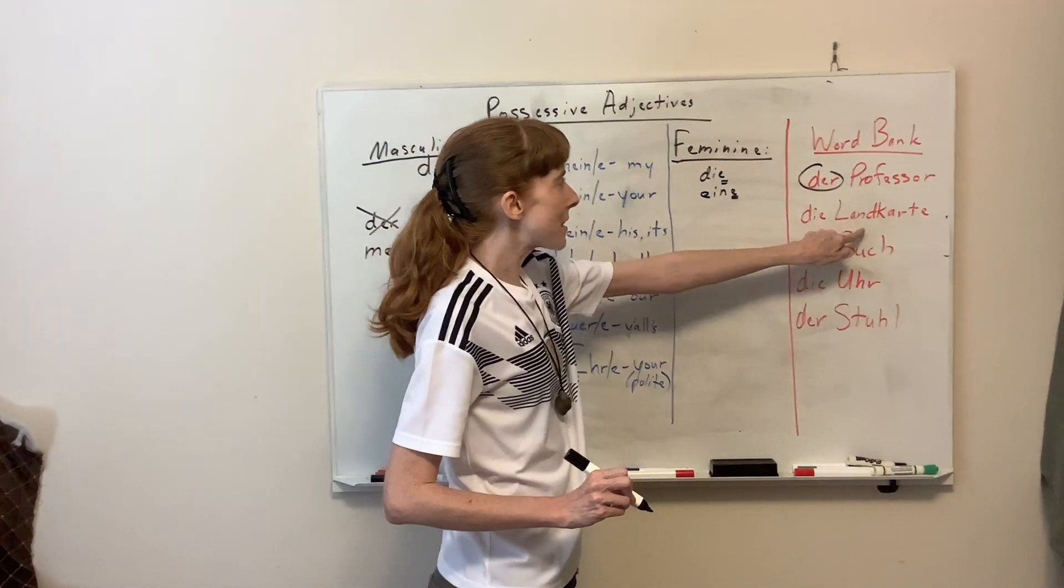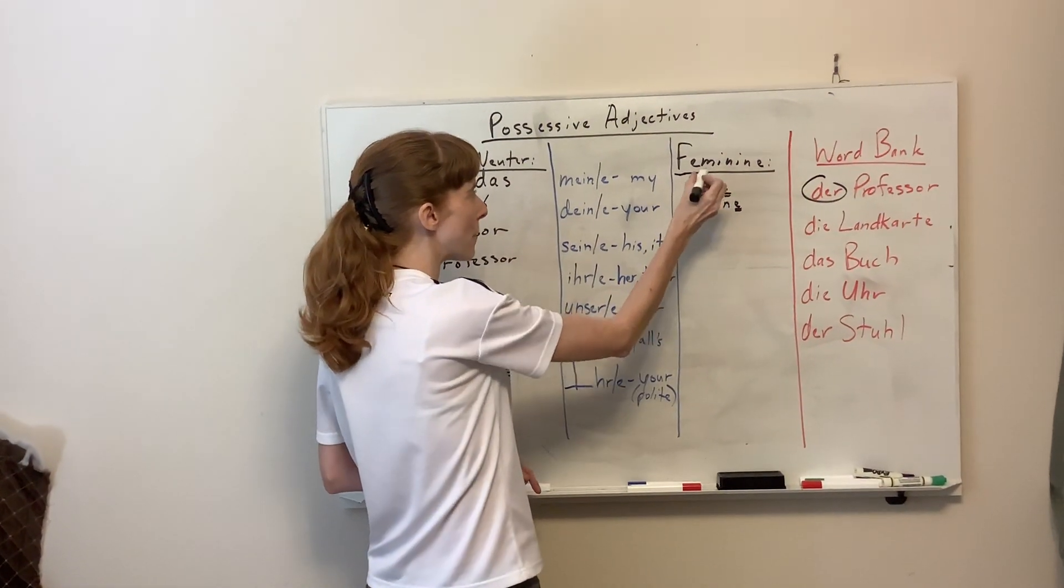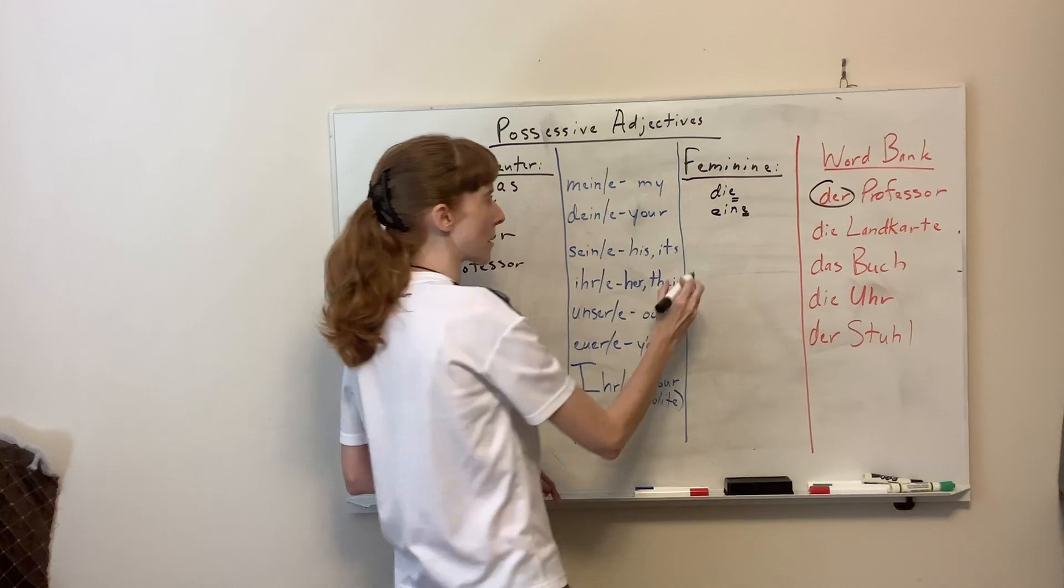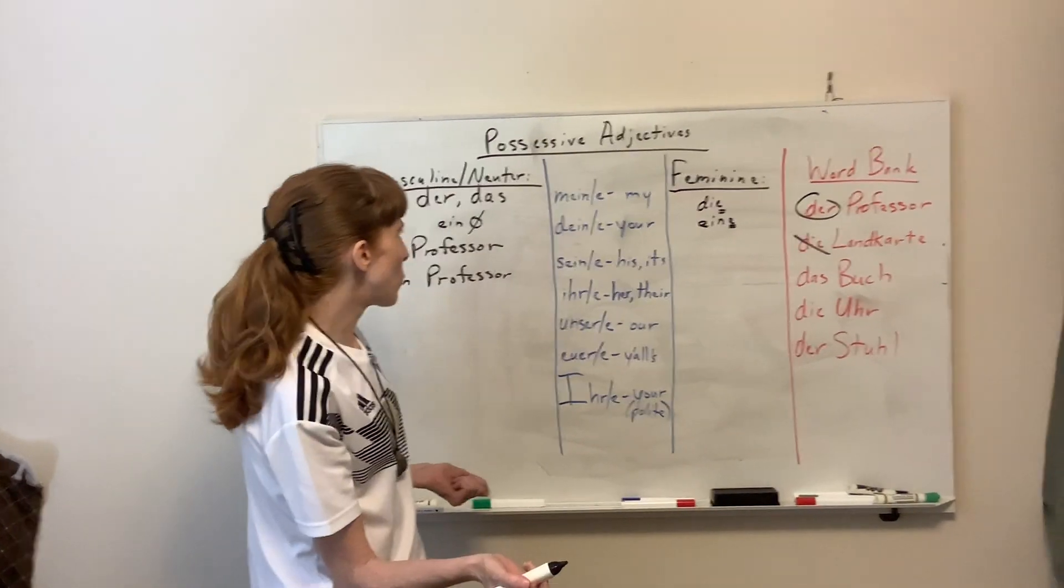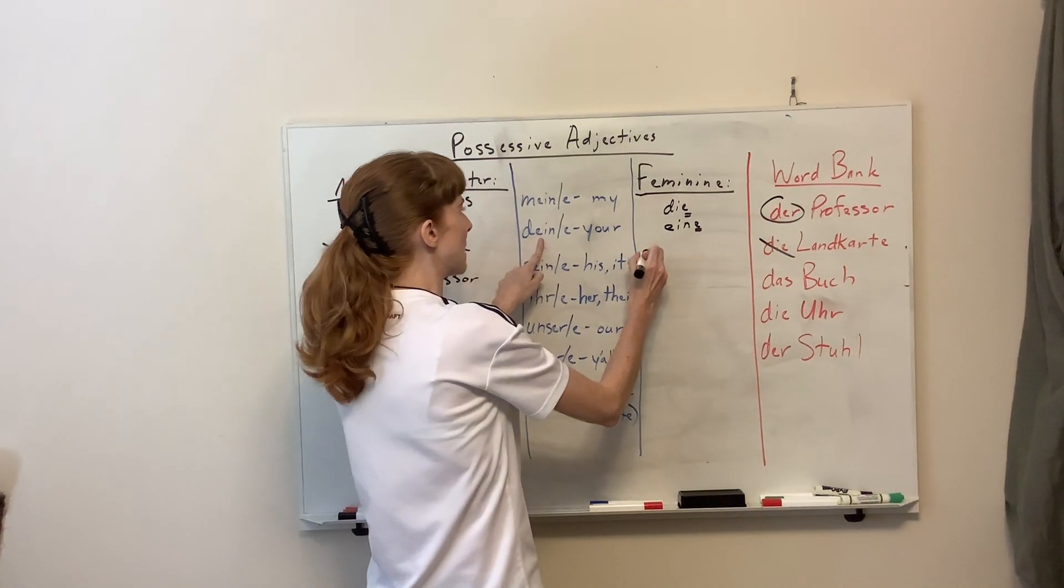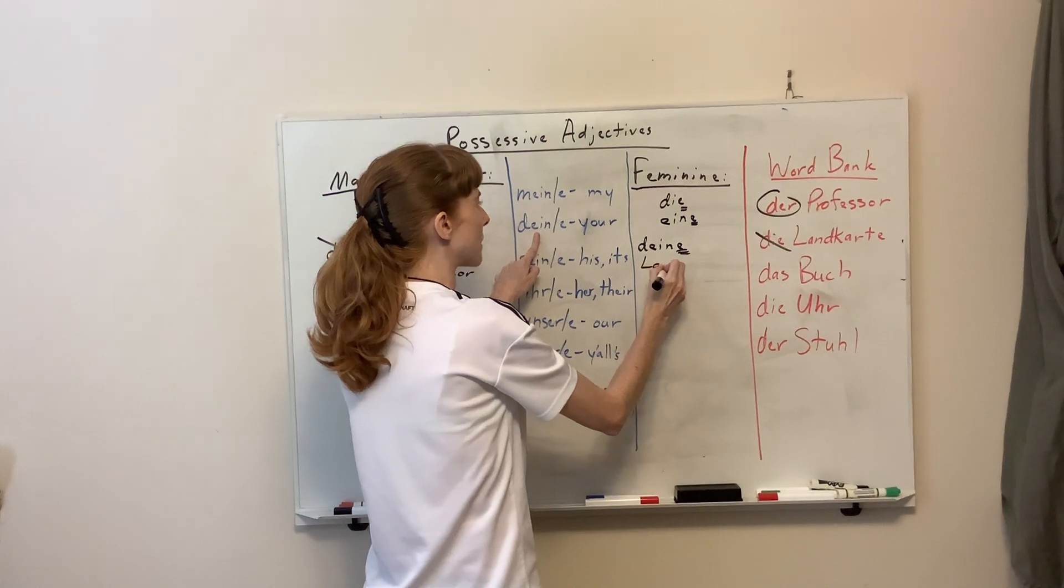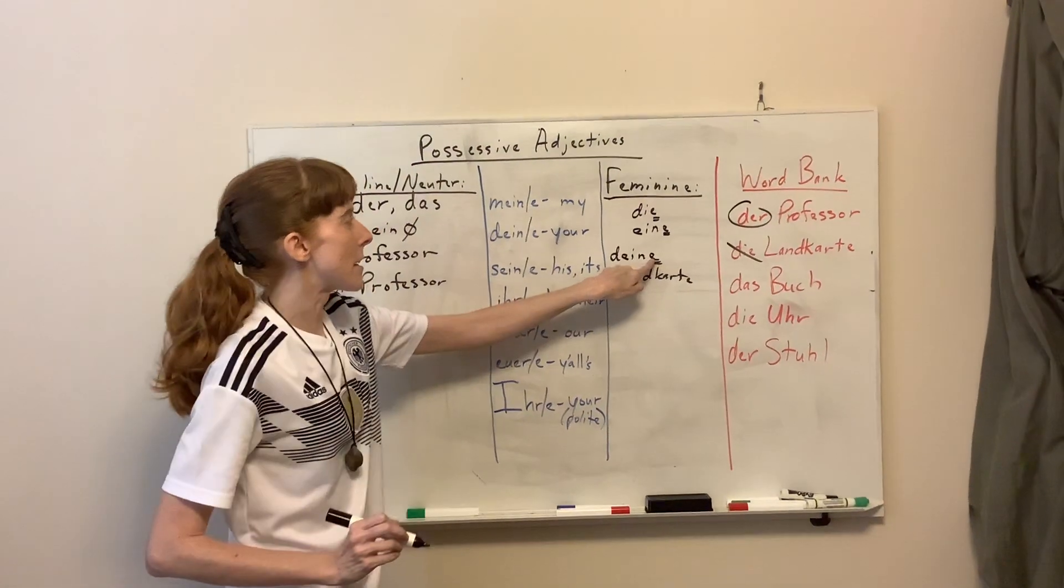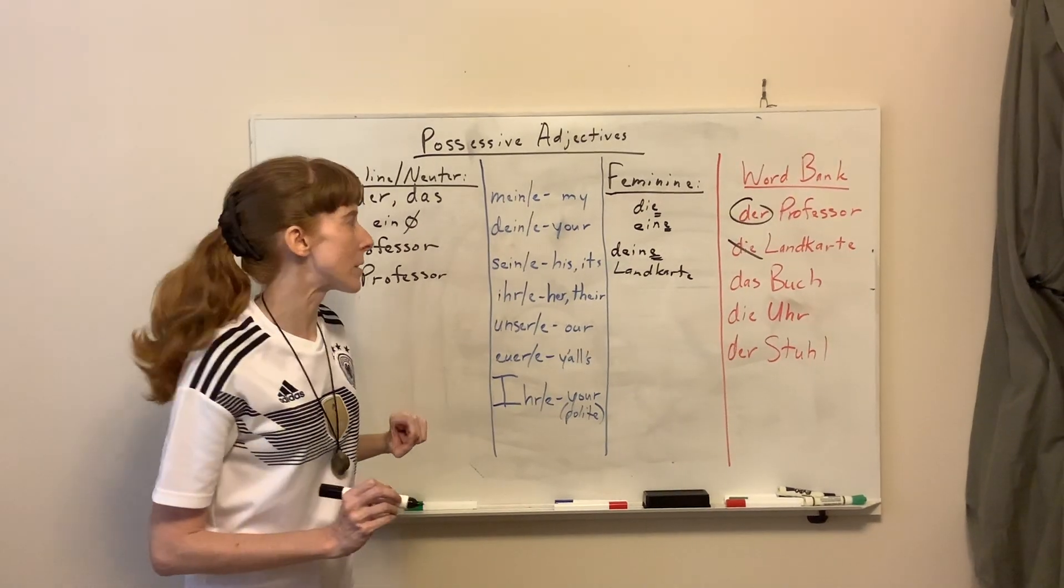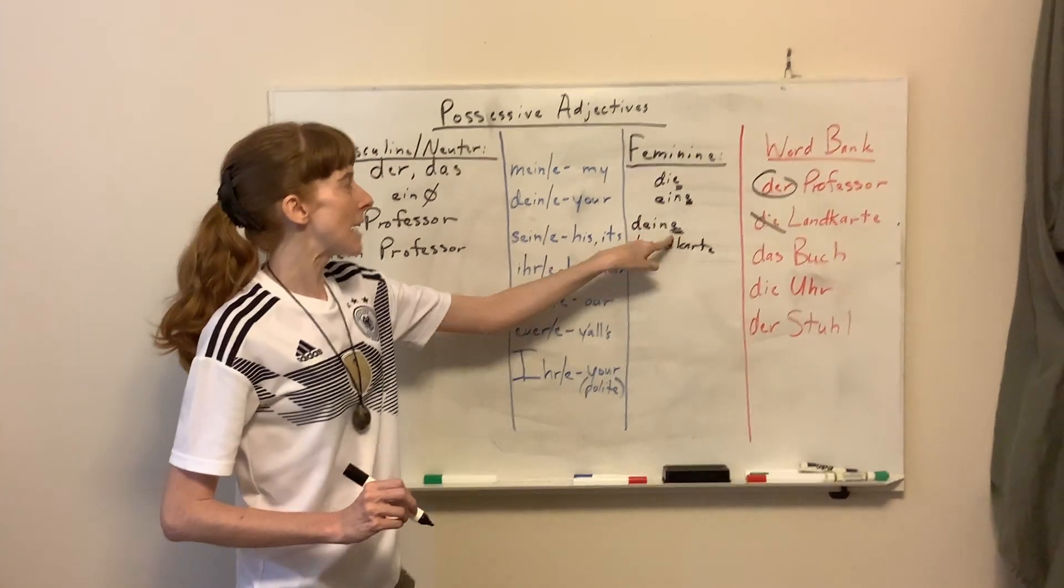Okay, now this one, die Landkarte, this is feminine. So we're going to take it over here to feminine and we know it's going to have an e at the end. So we're going to take off die and let's see, we want to make this your, your map. Deine Landkarte. Make sure you do pronounce that e on the end. We don't ignore e's on the end in German like we do in English. Deine Landkarte.